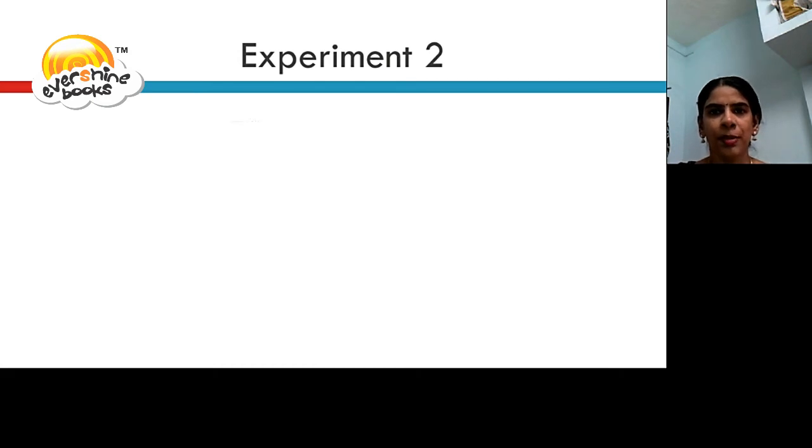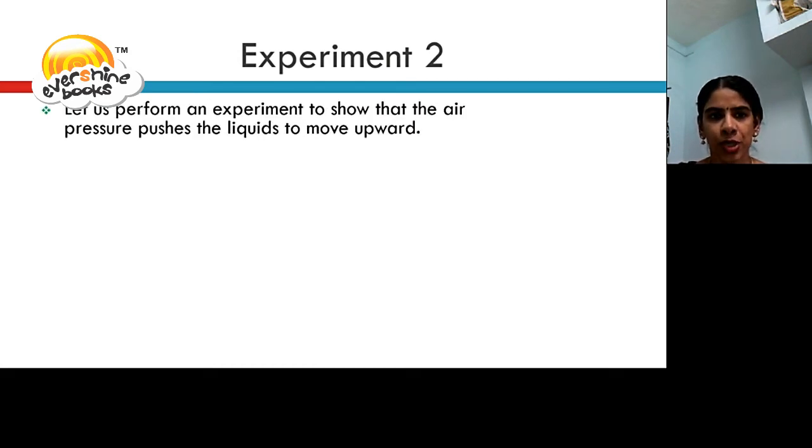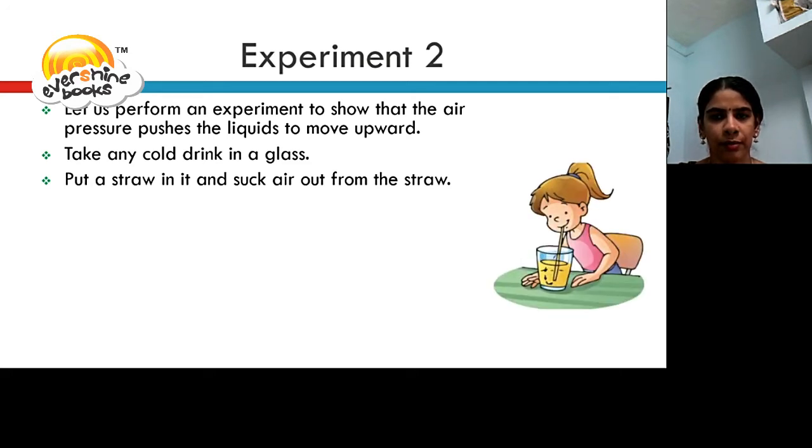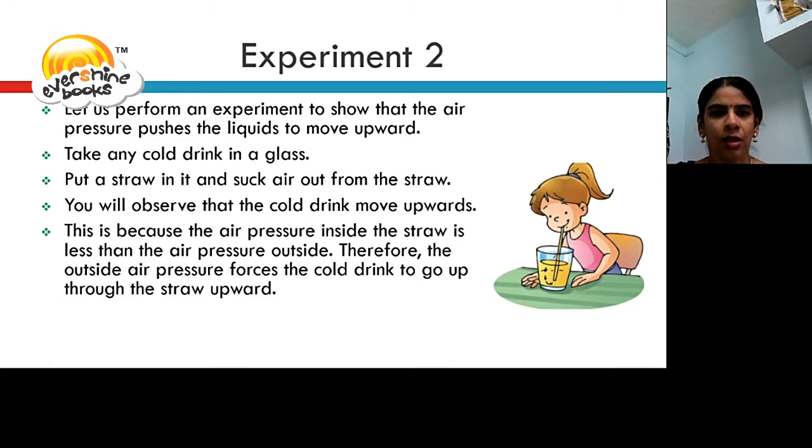Let us perform experiment 2 to show that air pushes the liquids to move upward. Take any cold drink in a glass. Put a straw in it and suck the air out from the straw. You will observe that the cold drink moves upwards. This is because the air pressure inside the straw is less than the air pressure outside. Therefore, the outside air pressure forces the cold drink to go up through the straw in the upward direction.